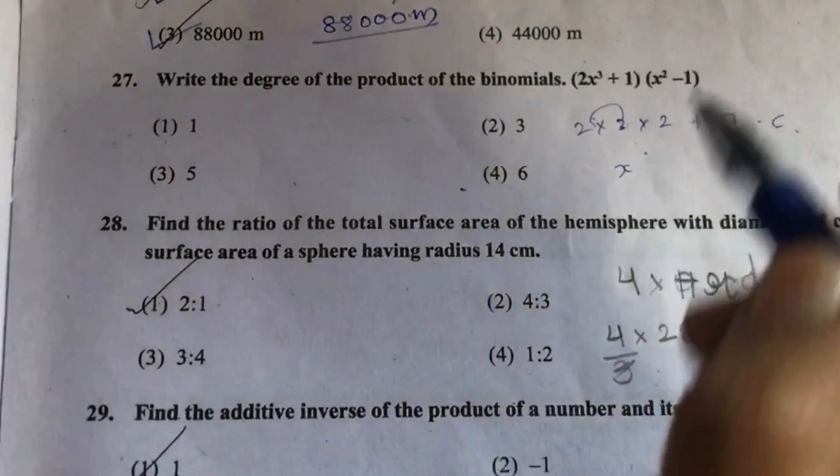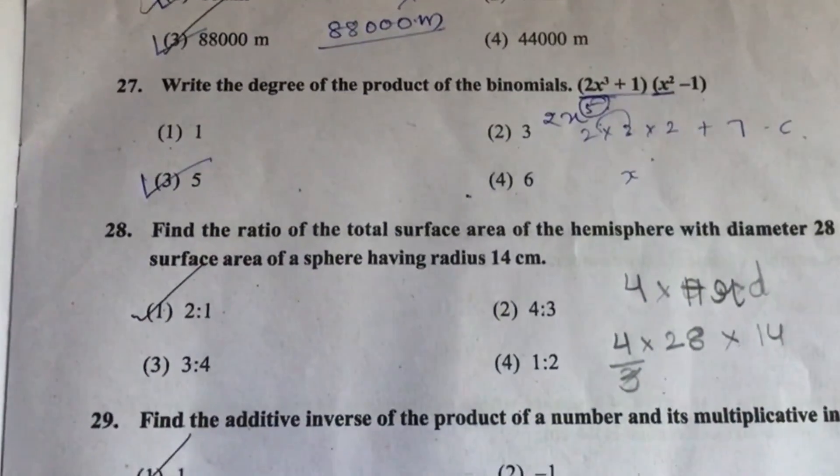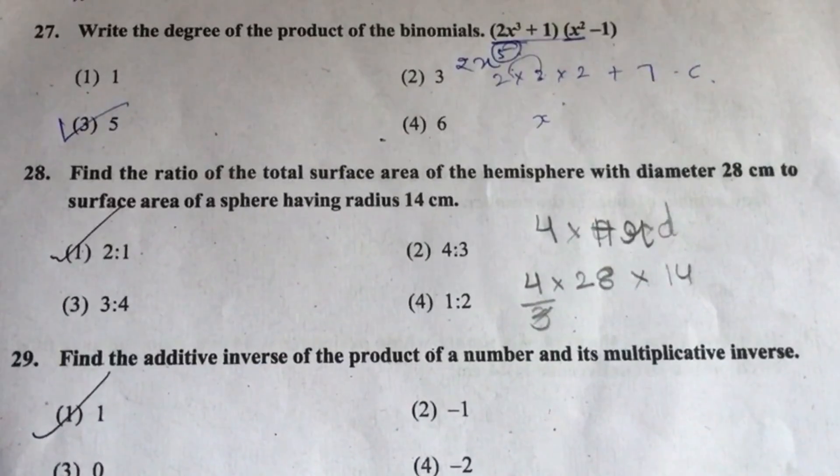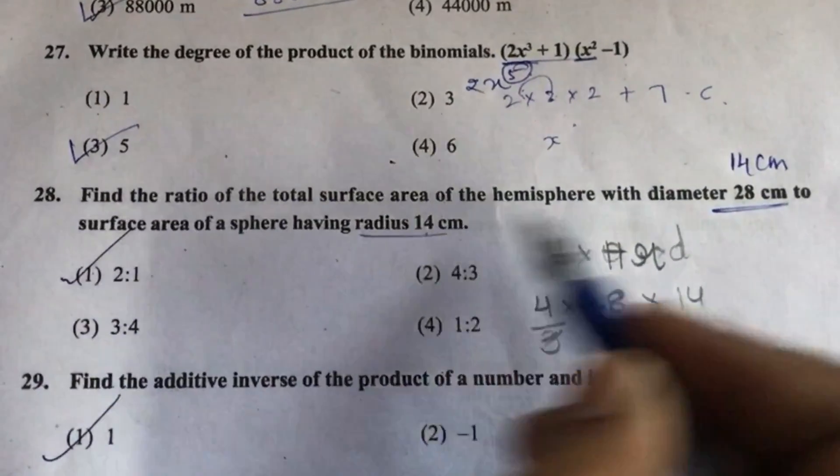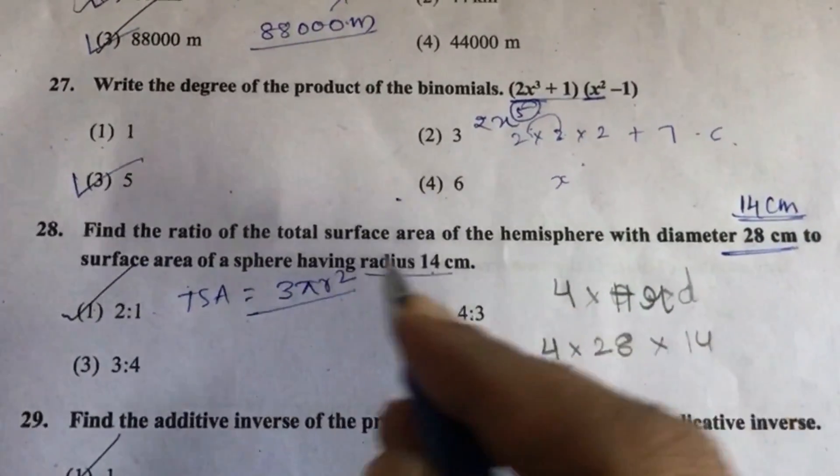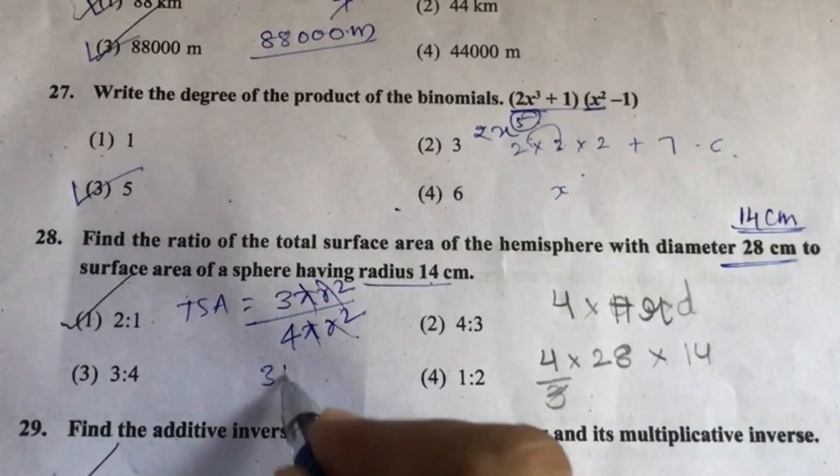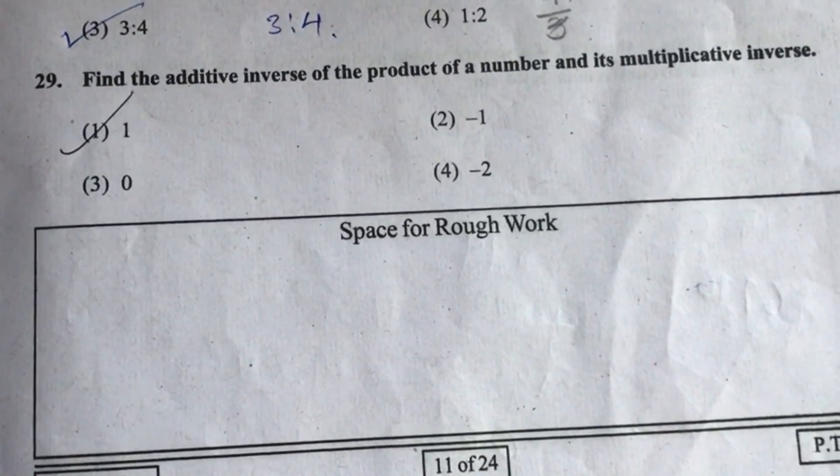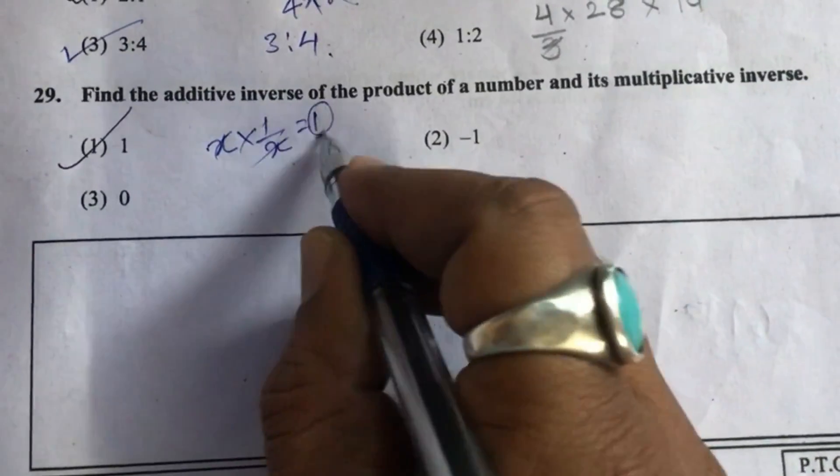So this answer is correct, and this converted into kilometers. Option 1 and 3. Question 27: Write the degree of the product of the binomials 2x cube and 2x square. When both multiply, we'll get 2x raised to 5, so degree of the polynomial is 5. Question 28: Find the ratio of the total surface area of the hemisphere with diameter 28 centimeter (radius is 14 centimeter) to surface area of a sphere having radius 14 centimeter. Total surface area of hemisphere is 3 pi r square, surface area of sphere is 4 pi r square. These will cancel, so answer is 3 raise to 4, option 3. Question 29: Find the additive inverse of the product of a number and its multiplicative inverse. Let the number be x, multiplicative inverse is 1 upon x, so the product is 1. Additive inverse is minus 1, option 2.